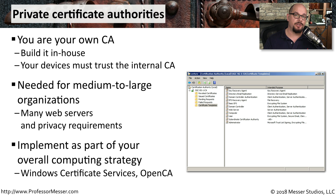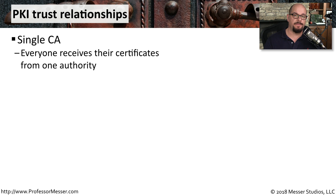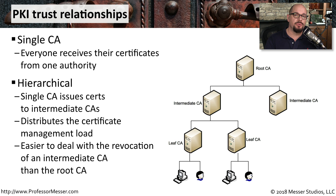There are many different software packages that can be used to help build your own CA. In Windows, there's Windows Certificate Services, and other platforms may want to use OpenCA. There are many ways to roll out a certificate authority. One way is to have a single CA for your organization, where every device and every person receives all of their certificates from the single certificate authority. However, in most environments, it's unusual to have a single certificate authority.